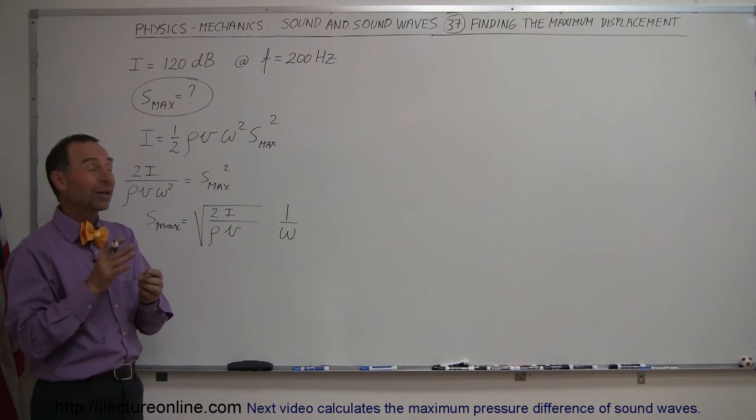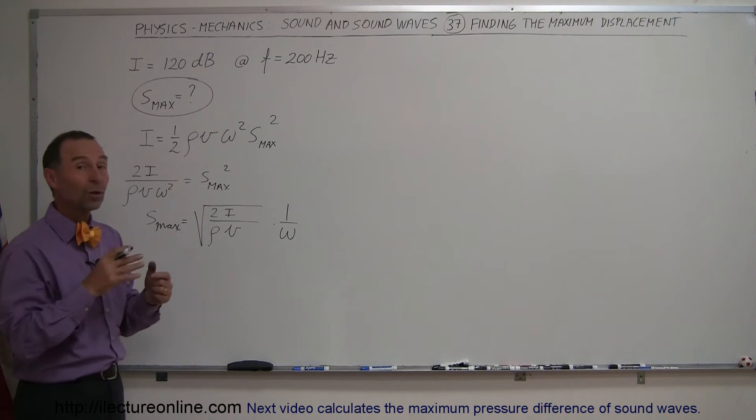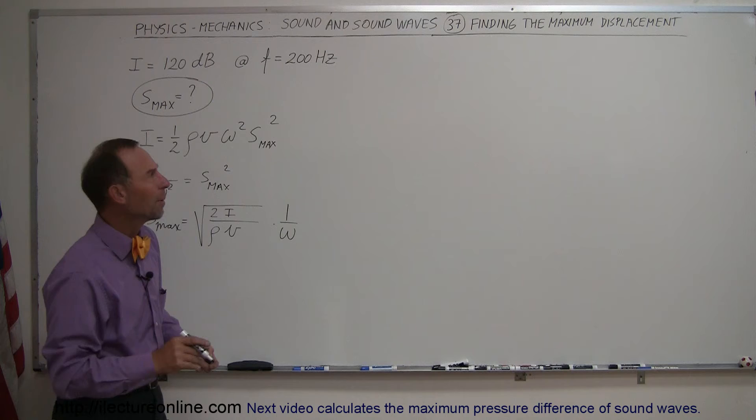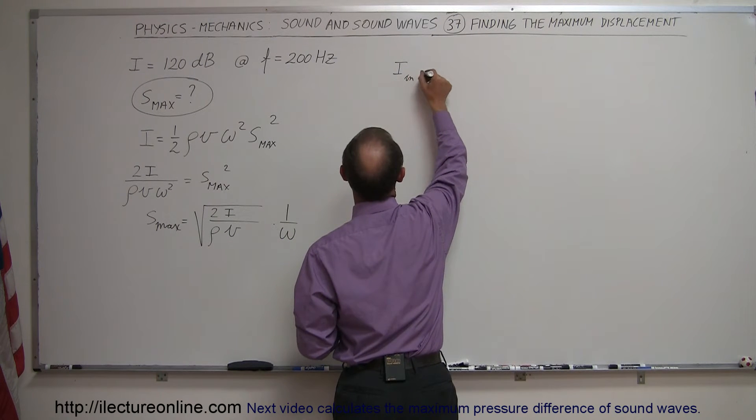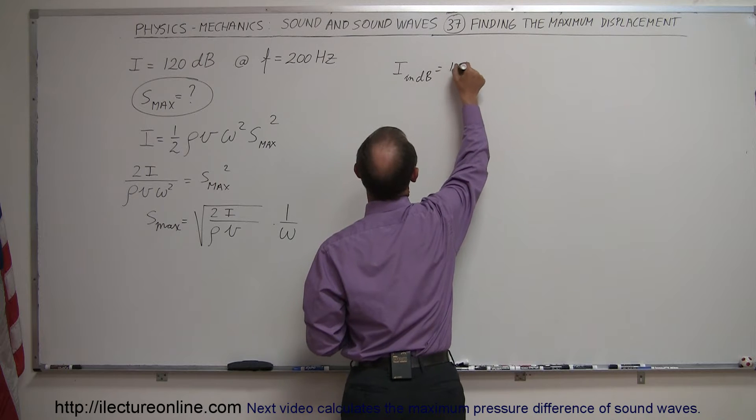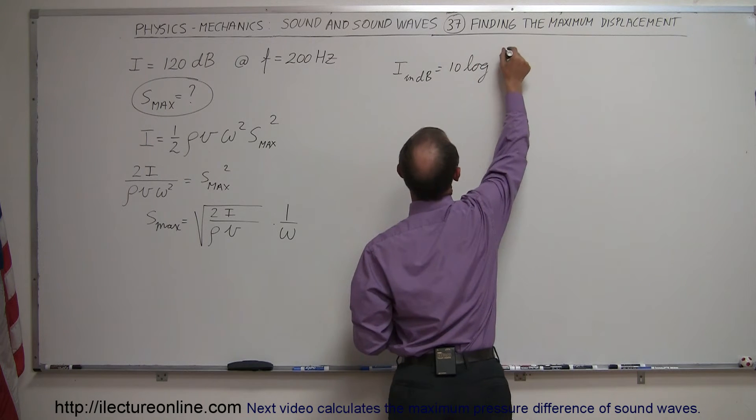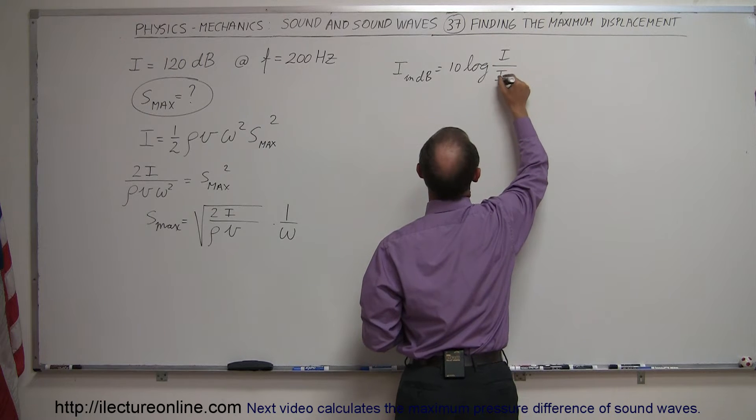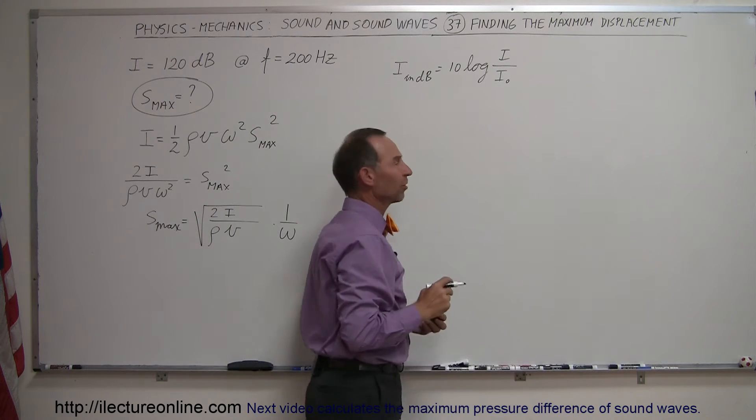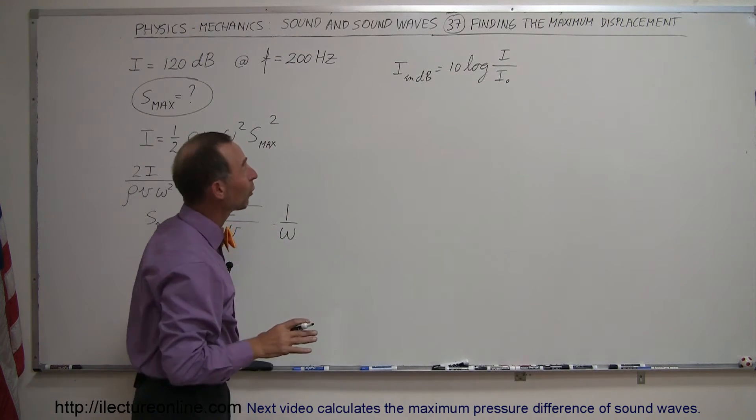Now you might remember that 120 decibels is equal to 1 watt per square meter, but what if you didn't remember that? Then we can say that intensity in decibels is equal to 10 times the log of the intensity we're looking for divided by the intensity of the base reference, which is 1 times 10 to the minus 12 watts per square meter.